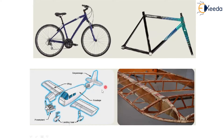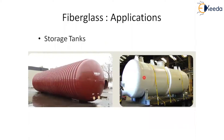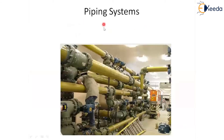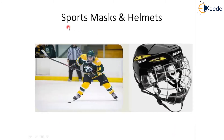Especially in aerospace, almost 85 percent of modern airplanes are now made with composite materials. Fiberglass is used in storage tanks and bathtubs. Piping systems also use composite materials because pipes must withstand high heat — particularly in thermal power plants where a lot of heat is generated.